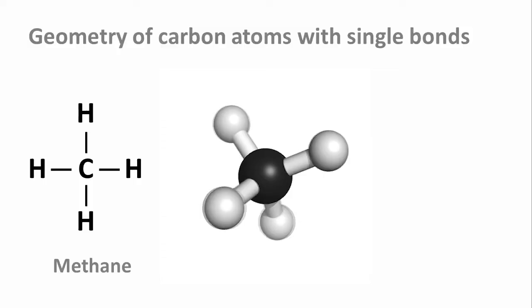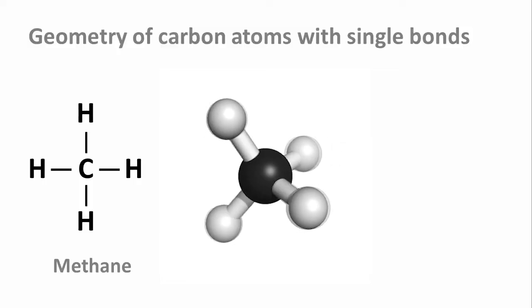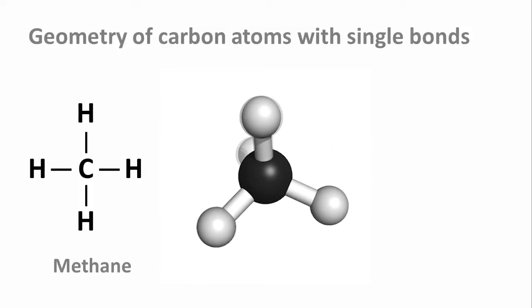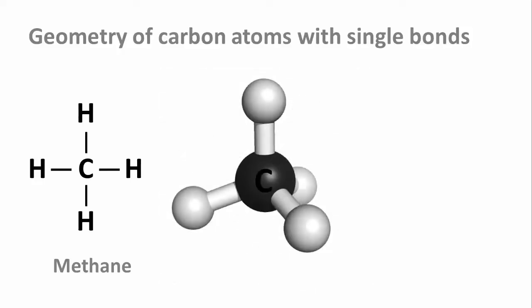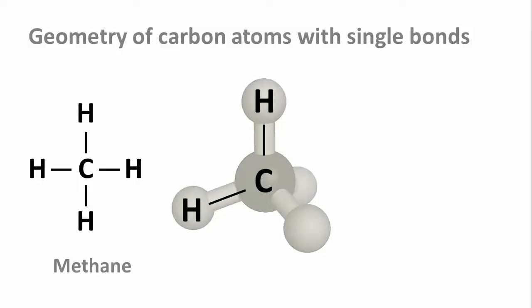You can see that it's not so easy to represent this 3D structure on a paper or a screen. To be clear about which atom is where, we draw the bonds that are in the plane of the screen or paper as regular lines, bonds that come towards us as a solid wedge, and bonds that are behind the plane of the screen or paper with these dashes. Sometimes we call this a wedge-dash representation.